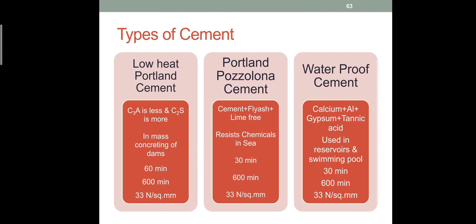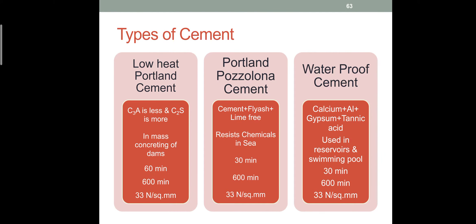There are three different varieties of waterproof cement. The third variety contains calcium aluminium gypsum and tannic acid. Tannic acid is derived from the skins of animals. This waterproof cement is used in reservoirs and swimming pools. These are all the types of cements, and now we are moving on to the tests of cements.